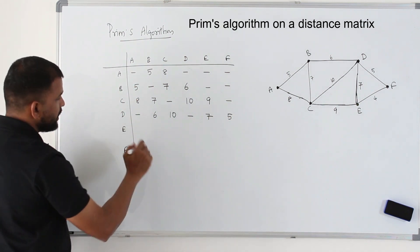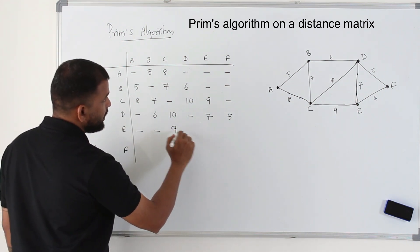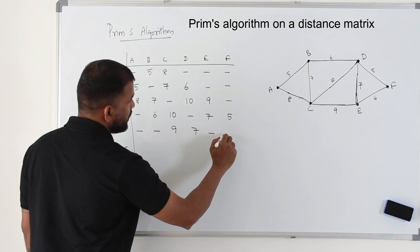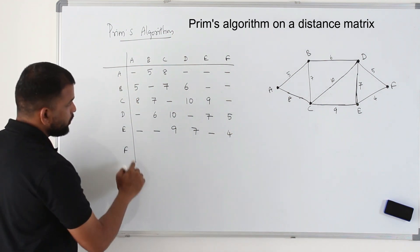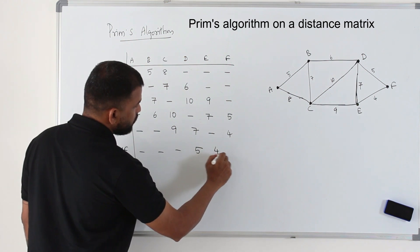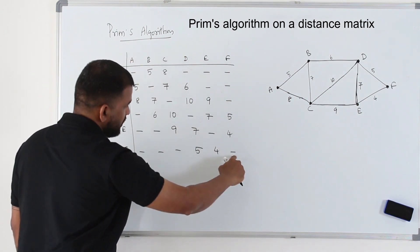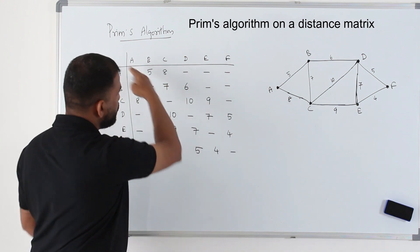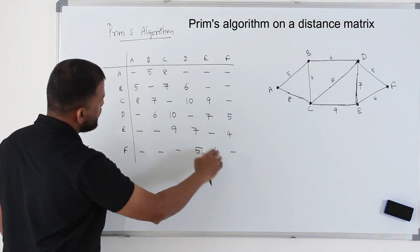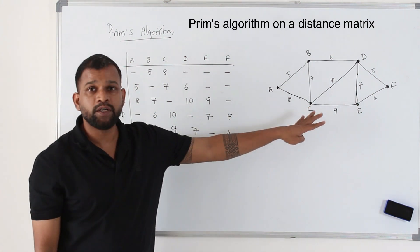From E: E to A and B — no direct edge. E to C is 9, E to D is 7, E to E — no loop, E to F is 4. And the last vertex F: D is 5, E is 4. How do you know your distance matrix is correct? If you look at the main diagonal, the matrix should be symmetrical about it. The numbers above and below the main diagonal are all the same. So this is the distance matrix corresponding to this graph.